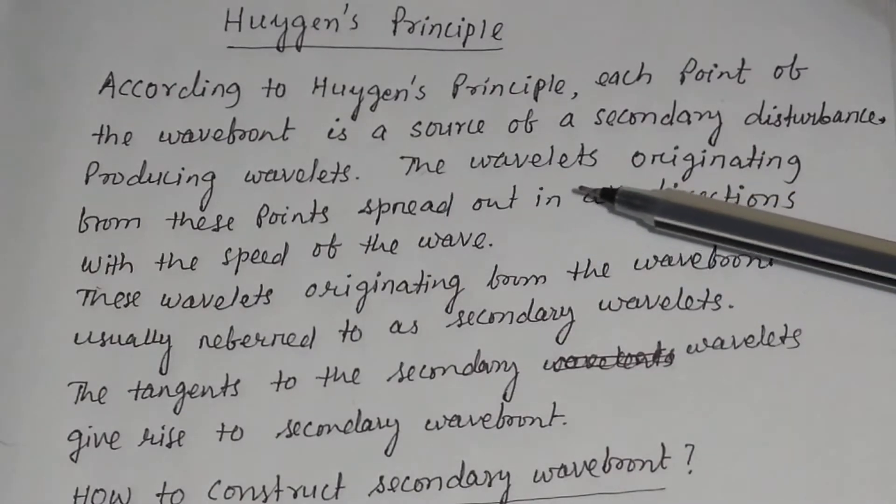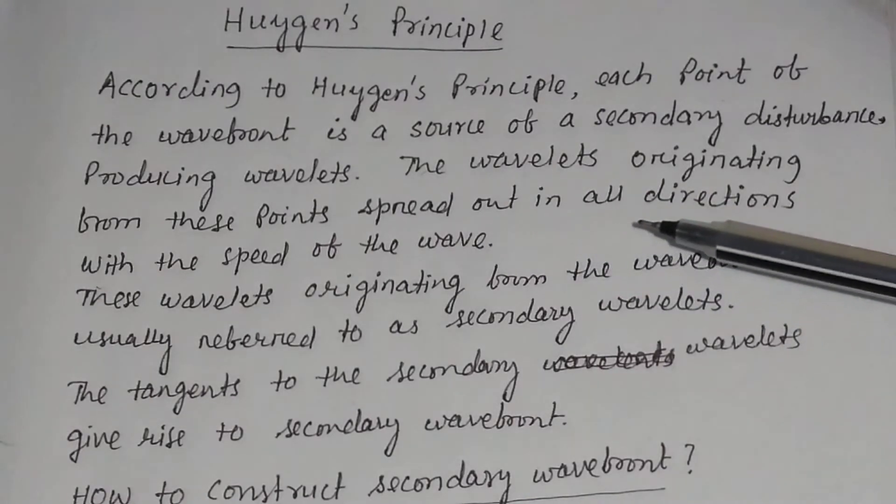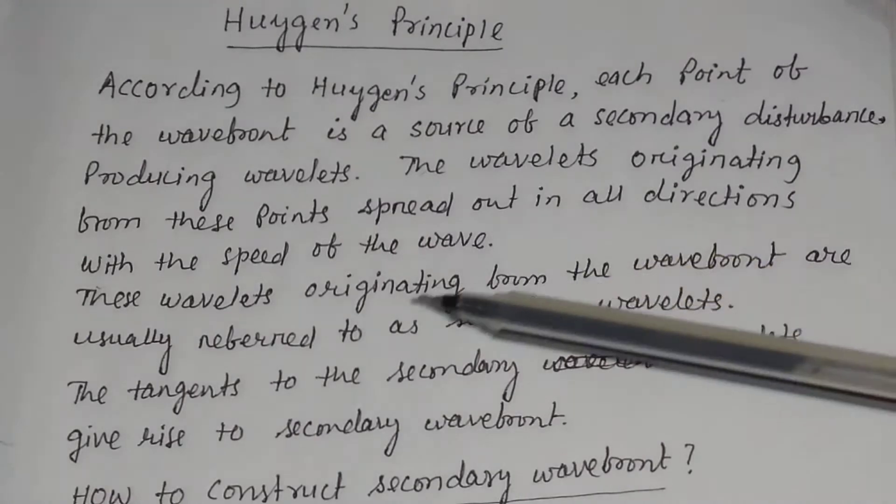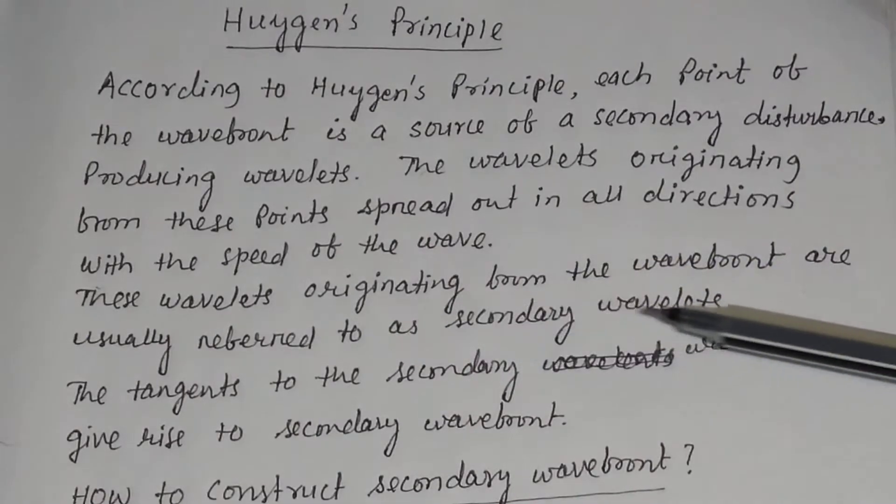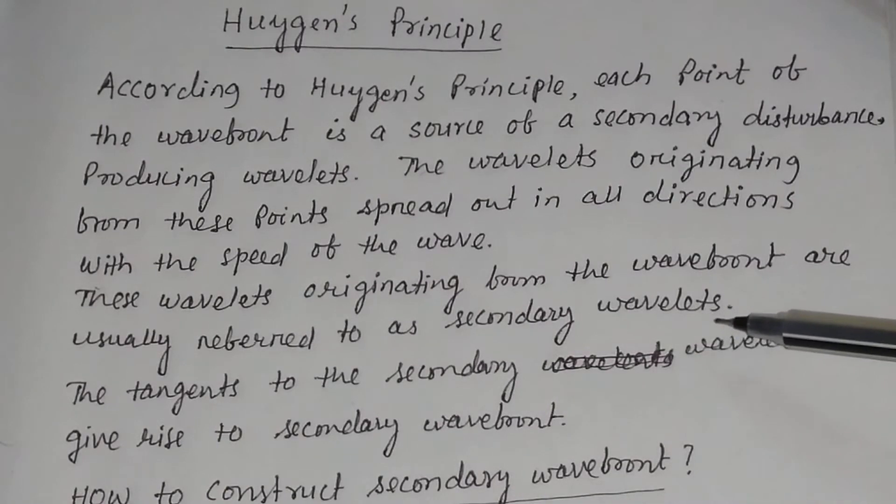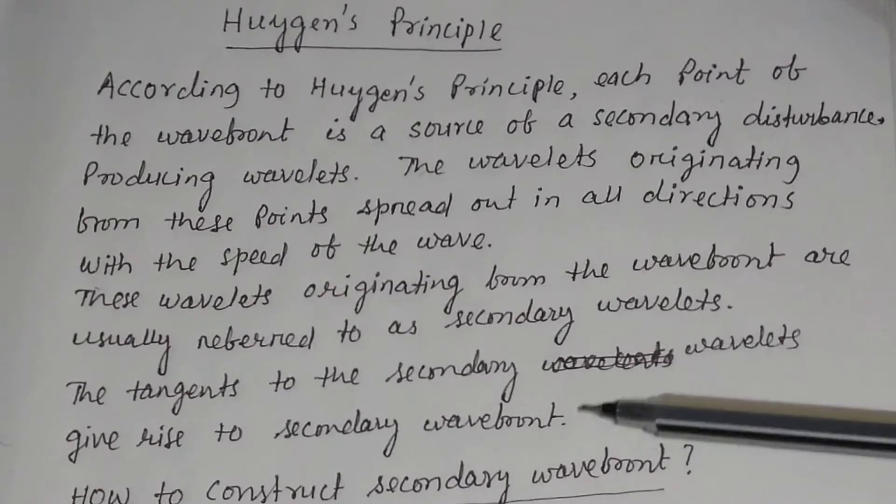The wavelets originating from these points spread out in all directions with the speed of the wave. These wavelets originating from the wavefront are usually referred to as secondary wavelets. The tangents to the secondary wavelets give rise to secondary wavefront.